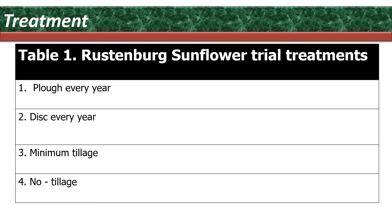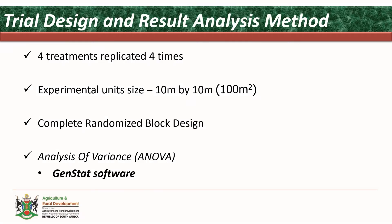Table one represents the four treatments: the first being plough every year, followed by disc every year, third one minimum tillage, and the fourth one being no-till. The trial design used four treatments replicated four times, giving about 16 experimental units, each unit being 10 meters by 10 meters. In order to avoid excessive environmental influences, the complete randomized block design method was employed. The results were analyzed using ANOVA as a statistical technique to assess significant differences, using GenStat.